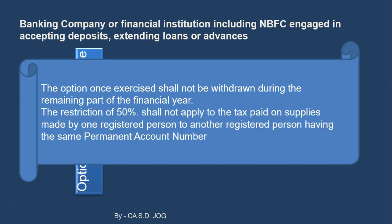The restriction of 50% shall not apply to tax paid on supplies made by one registered person to another registered person having the same permanent account number. A bank will have many branches in various different states, and from one branch to another branch, if they are providing any services, since the branch is in a different state, it will be a different taxable entity.